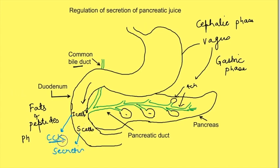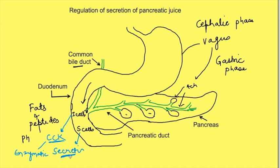CCK is the major stimulator of enzymatic secretion of the pancreas, while secretin is the major stimulator of bicarbonate and watery secretion from duct cells of the pancreas.